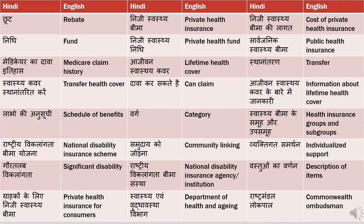'Rashtriya viklaangta Bhima yojna' means National Disability Insurance Scheme. 'Scheme' is translated as 'yojna', 'national' as 'rashtriya', 'disability' as 'viklaangta' — 'viklaang' means disabled, so 'viklaangta' means disability.